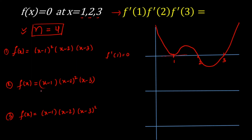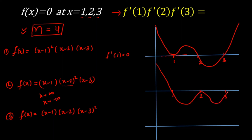In Case 2, f(x) = (x−1)(x−2)²(x−3) with repeated root at x = 2. Again, as x → ±∞, f(x) is positive. The graph shows a local maximum at x = 2 where the curve touches the x-axis, so f'(2) = 0.